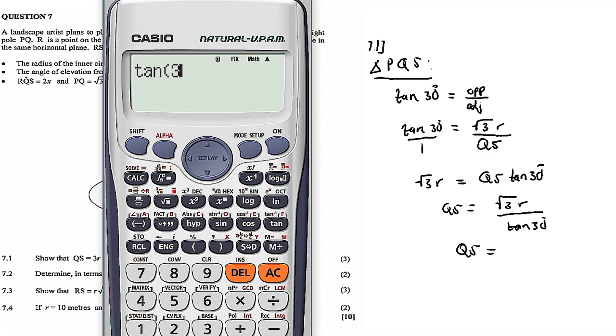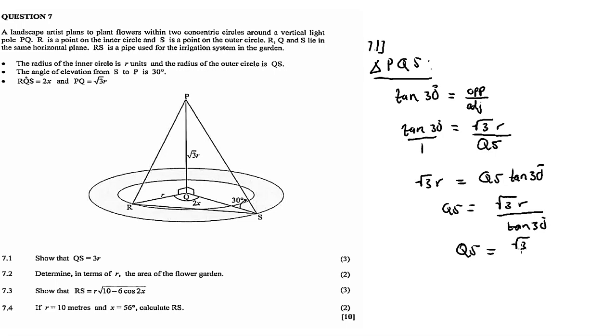Tan 30 is equal to square root 3 over 3. So it's square root 3r divided by square root 3 over 3. Now you simplify, this cancels. And then QS is equal to 3r. So this is our answer, 3r.